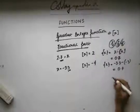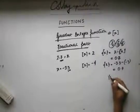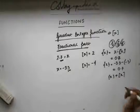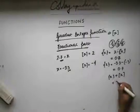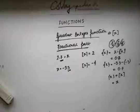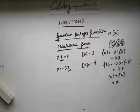You can also see that if you add the fractional part with the greatest integer function, you get the real number itself. This is how the greatest integer function is defined. Now let's look at some of the basic properties of the greatest integer function and the fractional part.